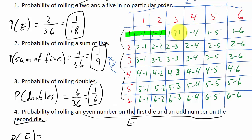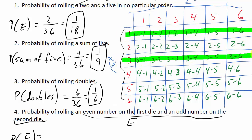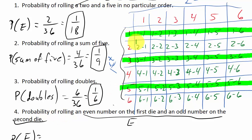The columns where the first die is 1, 3, or 5 are all odd, so we can rule those out entirely — we need an even on the first die. That eliminates those rows/columns.